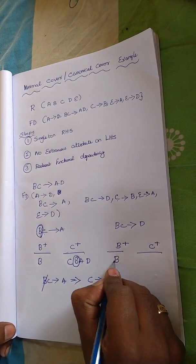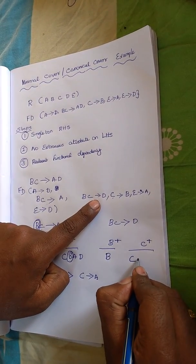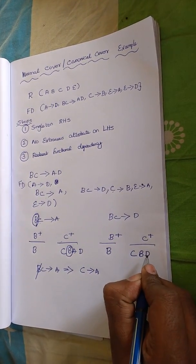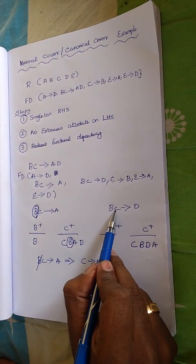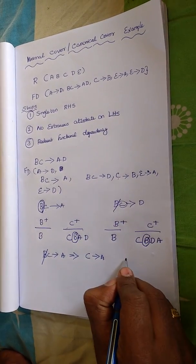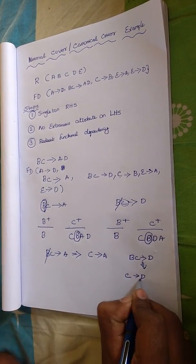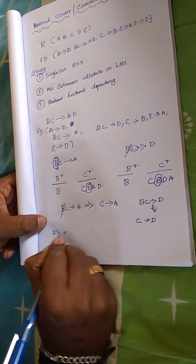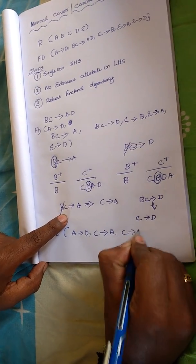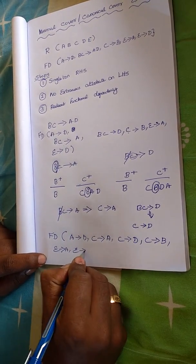Using C closure, we can eliminate B from both left-hand sides. So BC determines A becomes C determines A, and BC determines D becomes C determines D. The new functional dependencies are: A determines D, C determines A, C determines D, C determines B, E determines A, and E determines D.